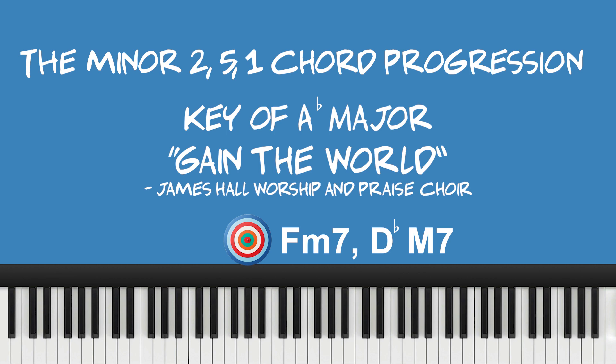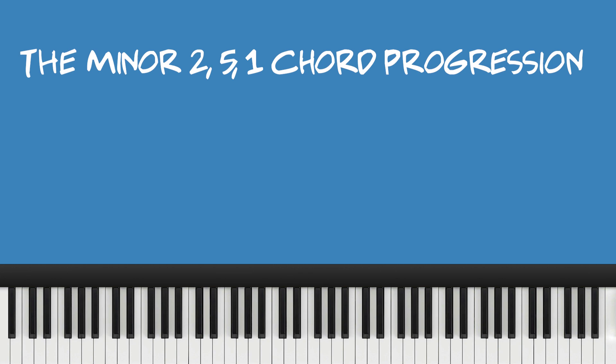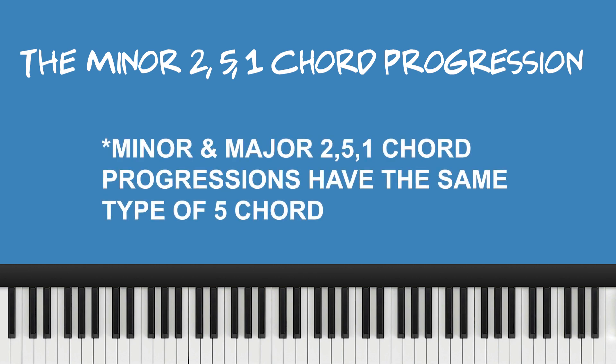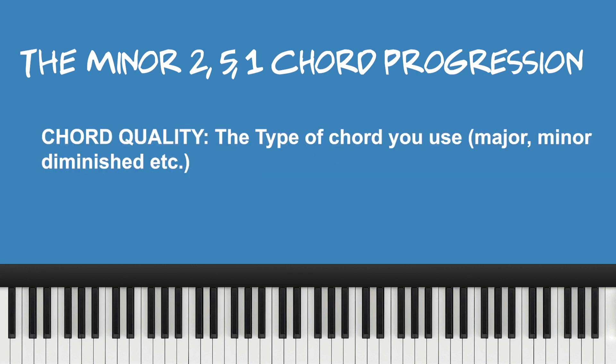Here's a secret they never told me as a beginner: both the major and minor 2-5-1 chord progressions use the same quality five chord. The qualities of the one and two chords are going to be slightly different. Chord quality basically describes the emotional or tonal character of a chord — you can think of it as the personality or flavor. The three most common chord qualities are major, minor, and diminished.